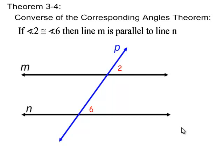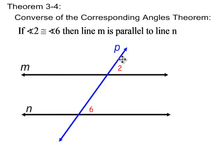The converse of the corresponding angles theorem: we learned before that if this line was parallel to this line, then we can conclude that this corresponding angle must be congruent to this corresponding angle. The converse switches the order of the if and the then. So instead of saying these two lines are parallel and then these angles are congruent, we say if this angle is congruent to that angle, then this line is parallel to this line.